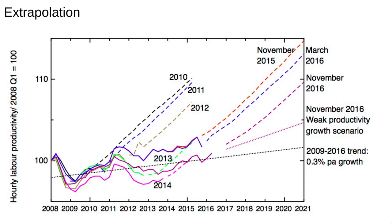This is a real example of a series of extrapolations on economic growth from the Office of Budget Responsibility in the UK. It's a little bit of a messy graph but we'll go through it carefully. The dashed lines are extrapolations that hugely overestimate economic growth. There are several issues going on here. The main two are extrapolating too far ahead on the basis of too few data points and using the wrong models.